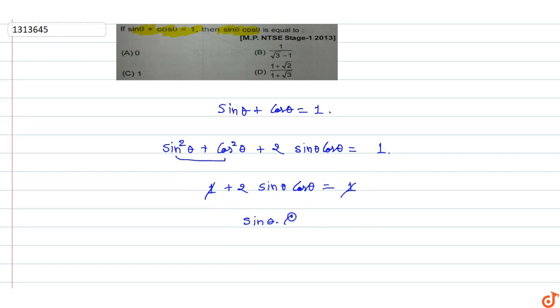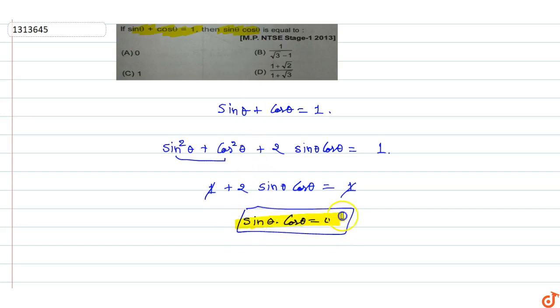So 2·sin θ·cos θ = 0, which means sin θ·cos θ = 0. Option A will be the correct answer. This is the answer for this question.